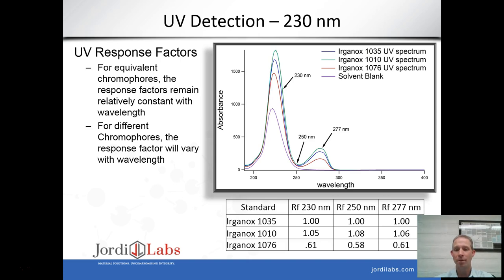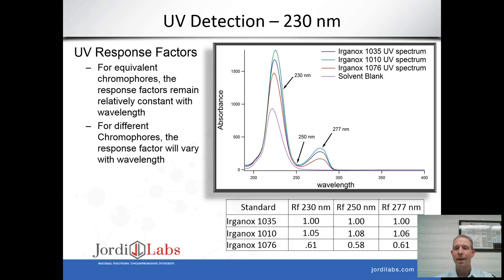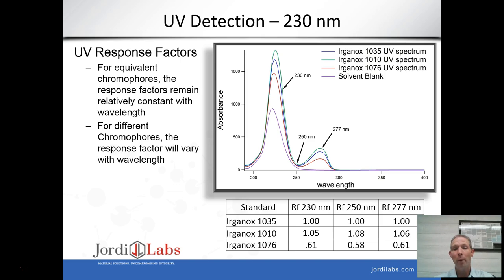An important consideration in UV detection is wavelength. All three Ergonox molecules show similar spectral types — they absorb at similar regions — and comparing response factors at three different wavelengths (230, 250, and 277 nm) shows they are very similar at all three due to the similarity of their overall spectra. However, if compounds had differently shaped spectra, the response factor could vary dramatically as a function of wavelength. Knowing the UV spectrum of your compounds is therefore important, and you want to pick a wavelength at which both your surrogate and your target compound show ideally equivalent absorption.